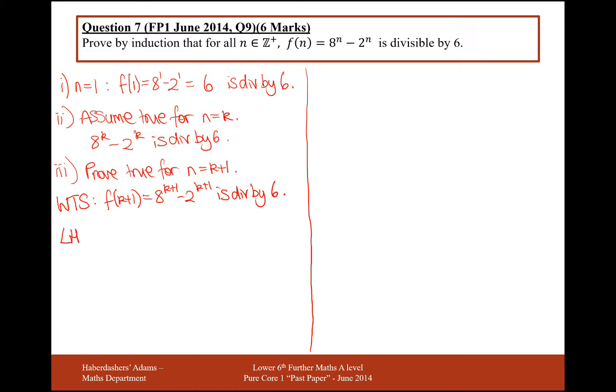I'll start off with the left-hand side of this proof, mainly the bit of algebra. Then, hopefully, I'll work my way through until I get to the right-hand side, which is that this theorem is divisible by 6. So, left-hand side starts with 8 to the k plus 1, take away 2 to the k plus 1.